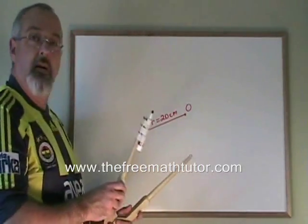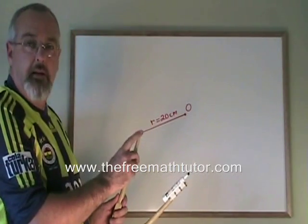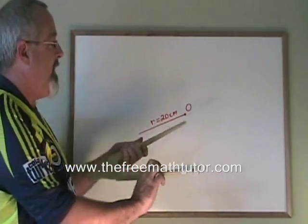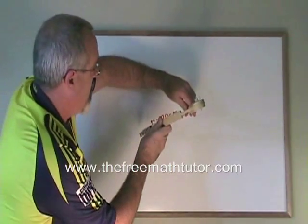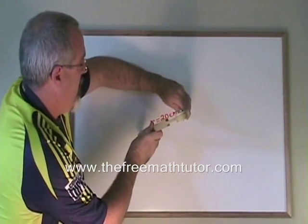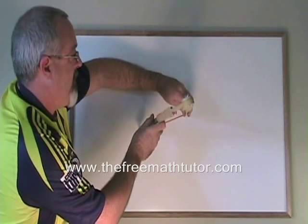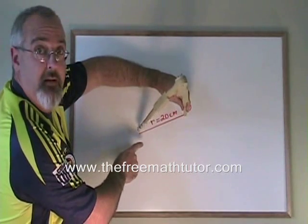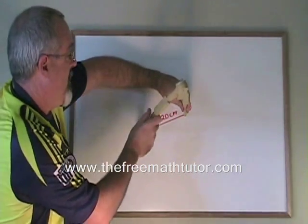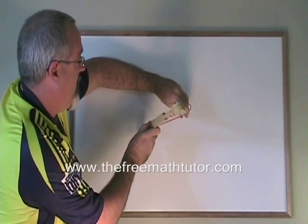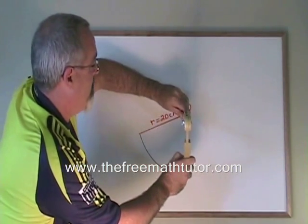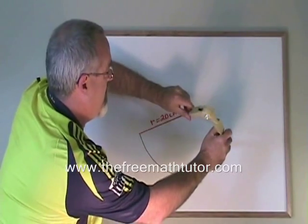Now we take our compass and we take the end that does not have a pencil on it and we put that on our O. Then, making sure that the other end with the pencil is 20 centimeters away, I have to carefully move the compass in a circle around this zero dot.